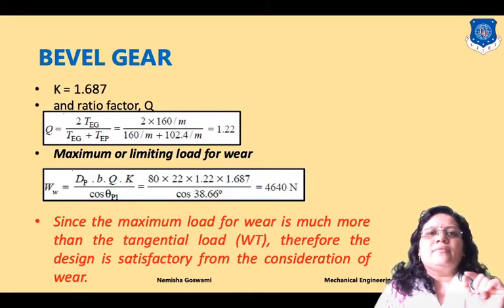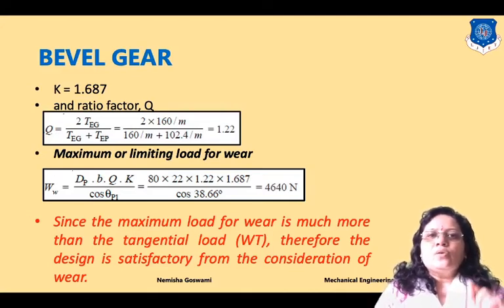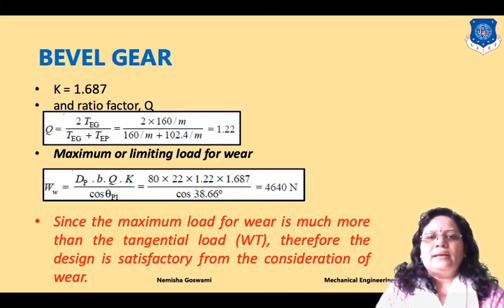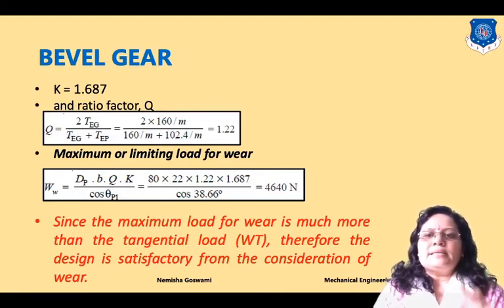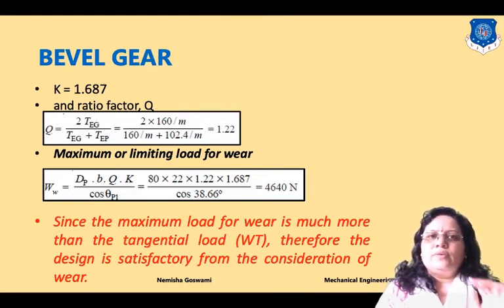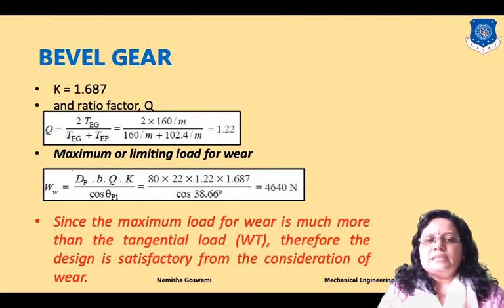After finding K, we calculate the ratio factor Q: Q = 2 × Teg / (Teg + Tep). Substituting the equivalent teeth values, Q = 1.22. The maximum wear load is: Ww = dp × b × Q × K / cos θp1 = 80 × 22 × 1.22 × 1.687 / cos(38.66°) = 4640 N.